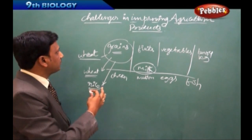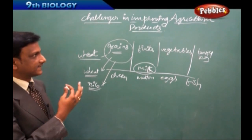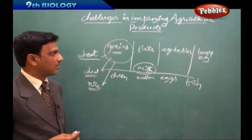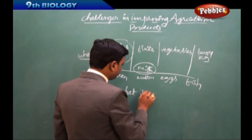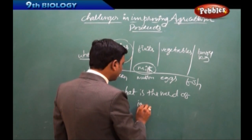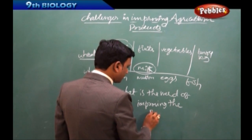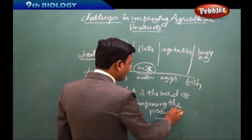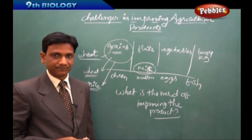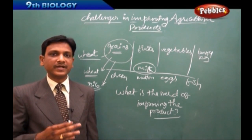In this lesson we are going to talk about the challenges in improving agricultural products. What challenges exist, and why is it challenging to increase agricultural production? First, let us understand what is the need for improvement. In our country there is an immediate requirement to improve the quantity of agricultural products.